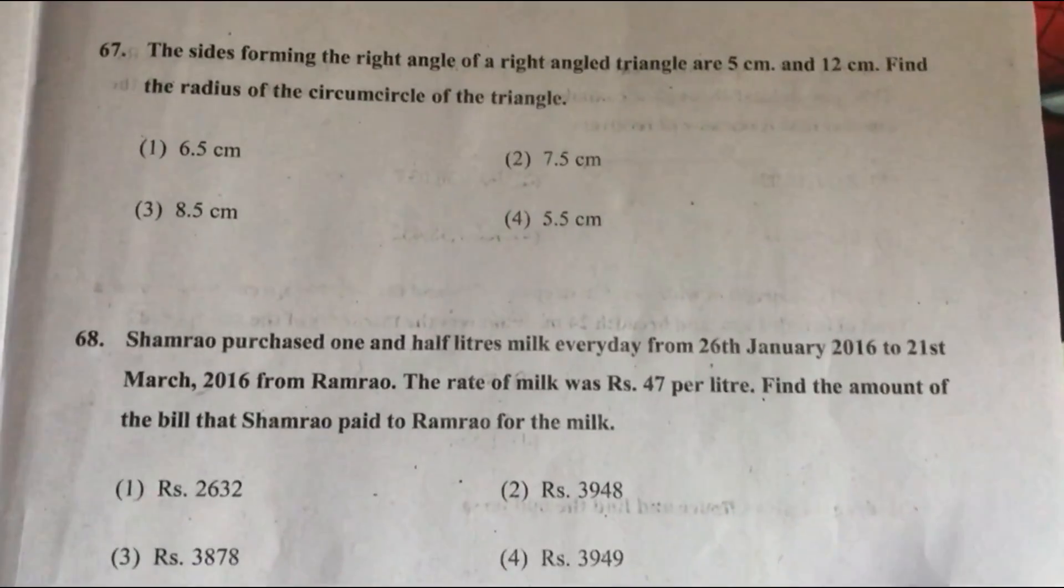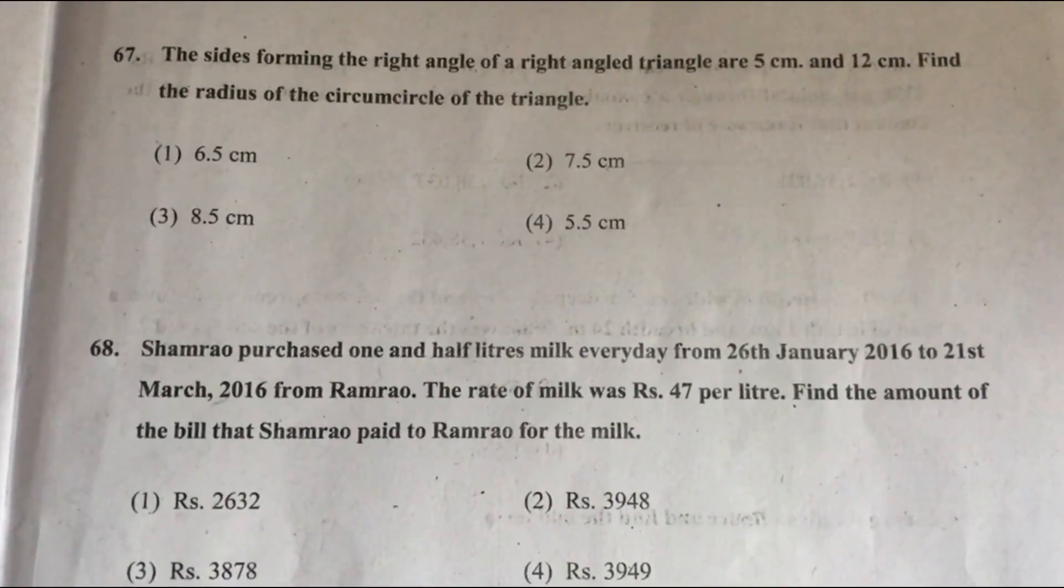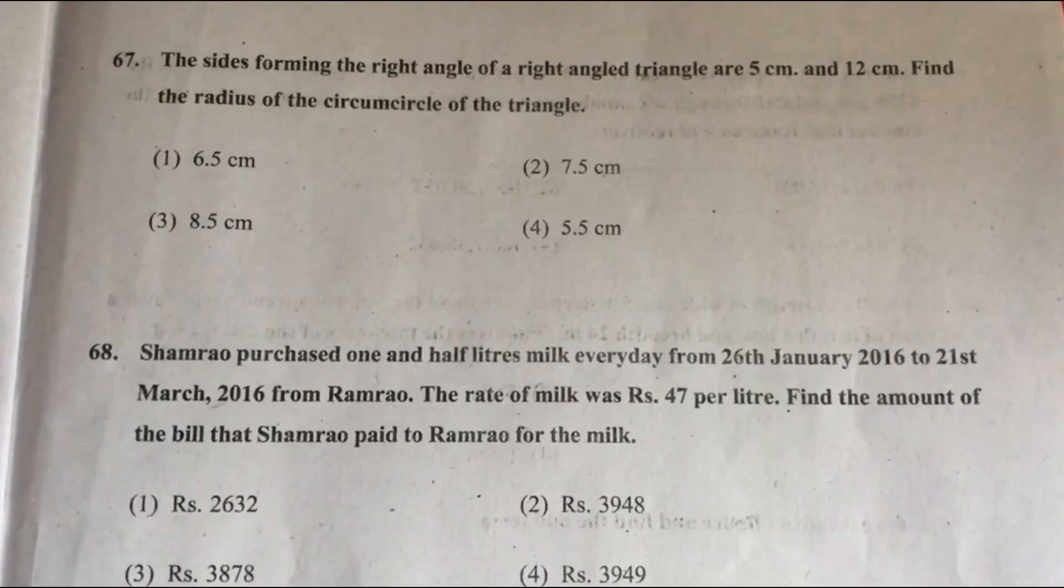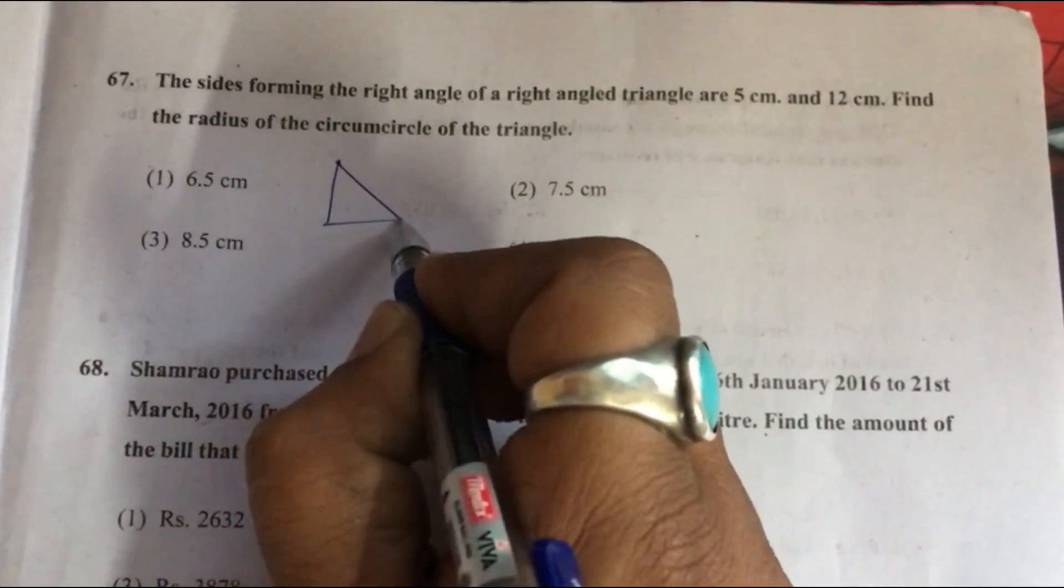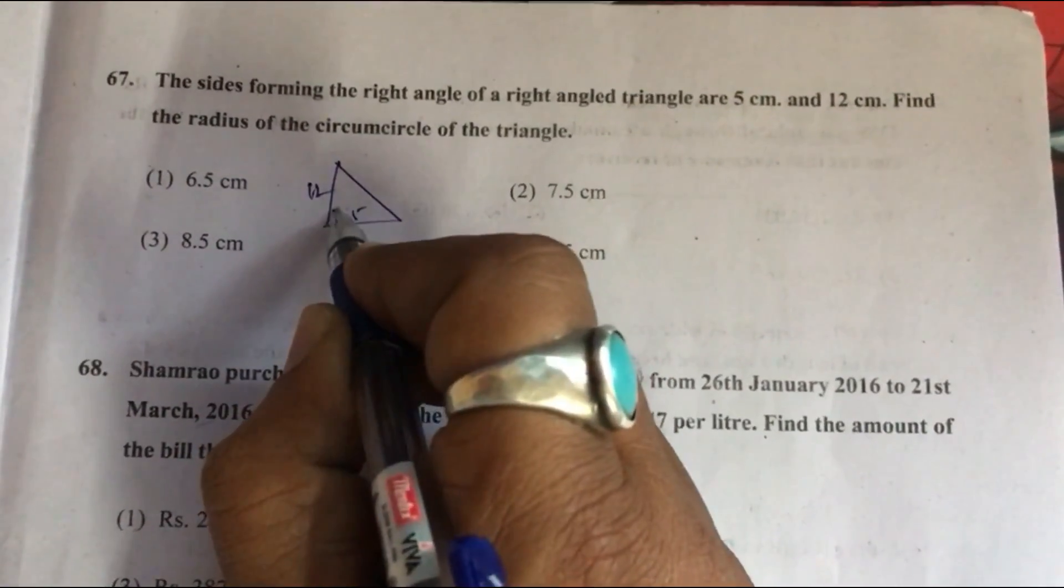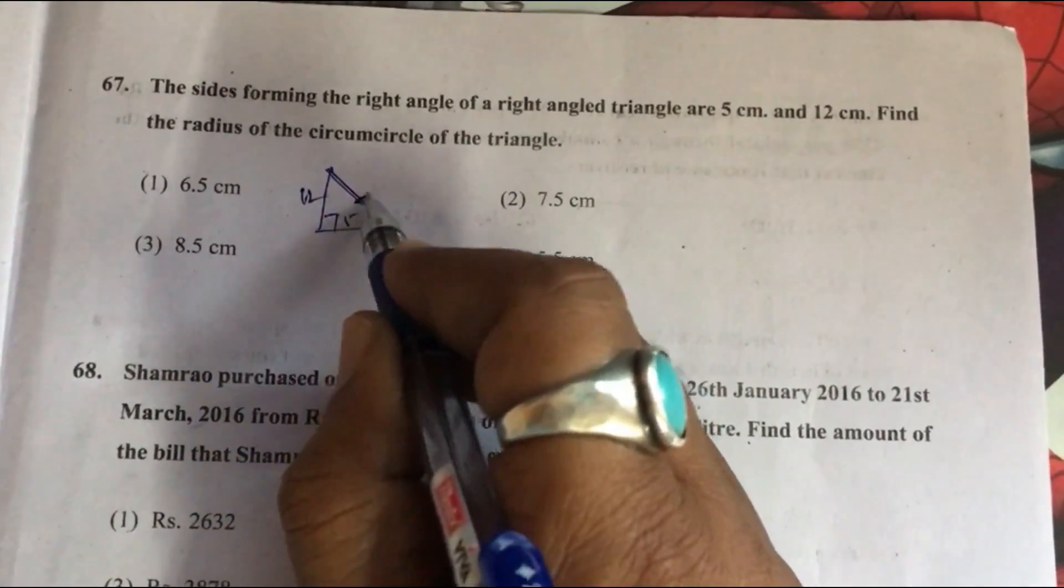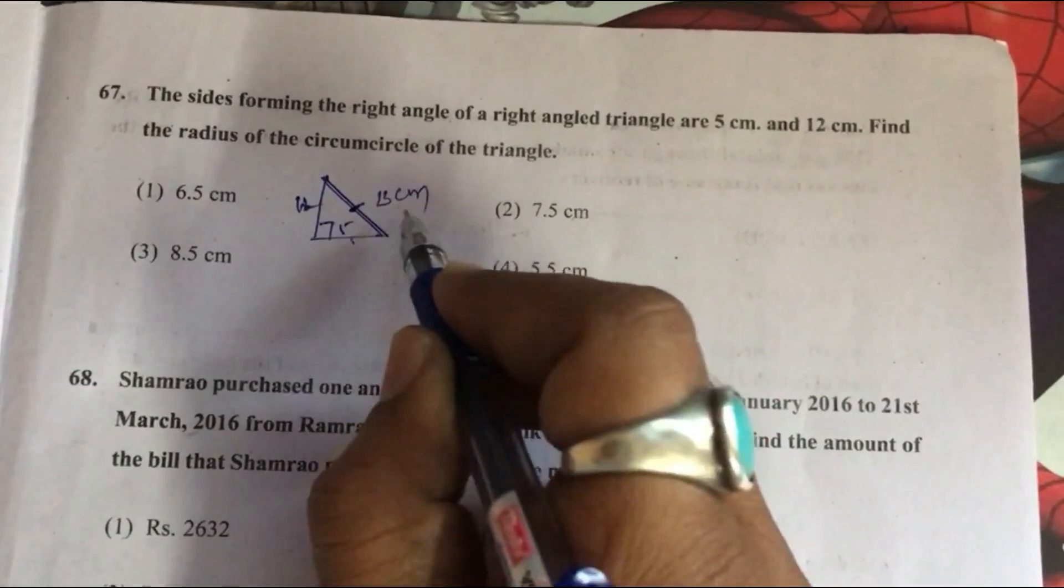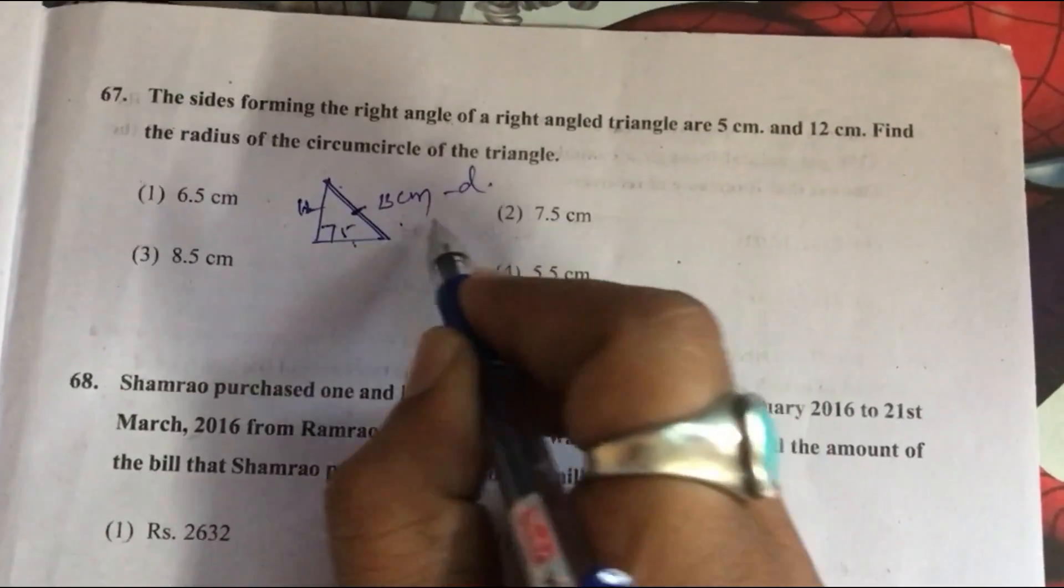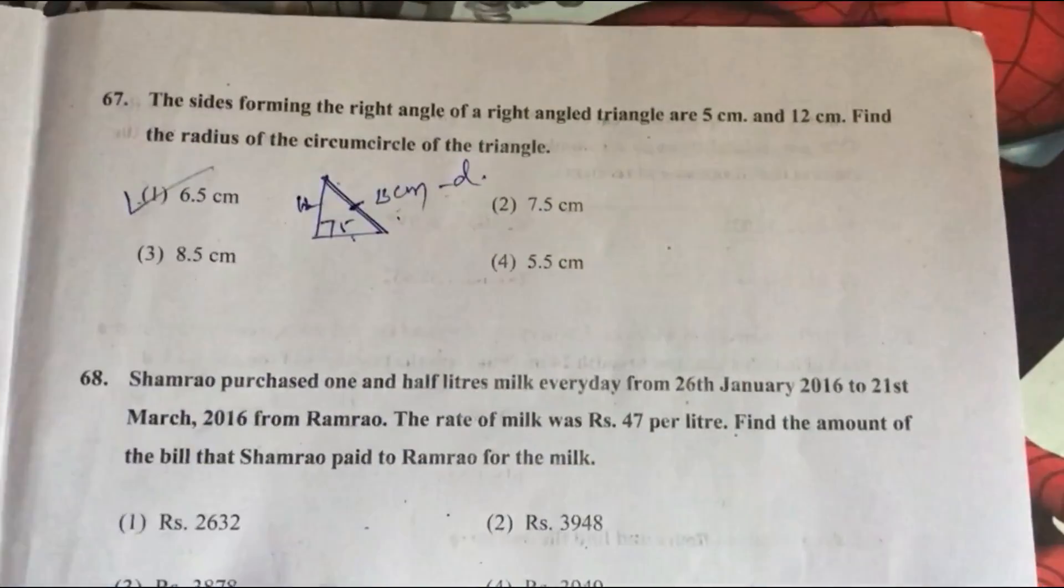Question 67: The sides forming the right angle of a right angle triangle are 5 centimeter and 12 centimeter. Find the radius of the circumcircle of the triangle. For the circumcircle, radius passes through the center. By Pythagoras theorem, we will get 13 centimeter. 13 centimeter is the diameter. Half of the diameter is radius, so answer is option 1, 6.5 centimeter.